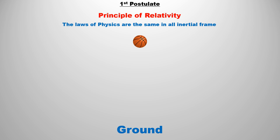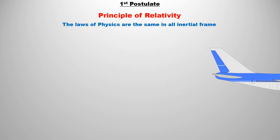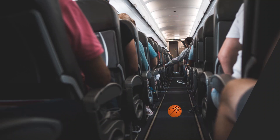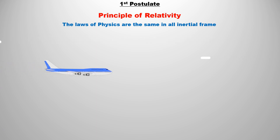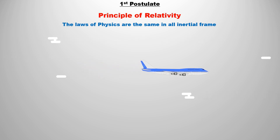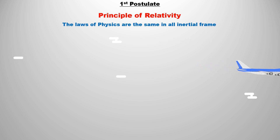If we drop a ball on the ground, the ball falls vertically downward. The second frame is an aeroplane in uniform motion at a constant speed. Now if the ball is dropped inside the plane, it will also fall vertically downward — it does not matter that the plane is moving with respect to Earth at a speed of 800 km per hour. Since both frames are inertial, the way an event occurs in one frame, the same will happen in the other frame.